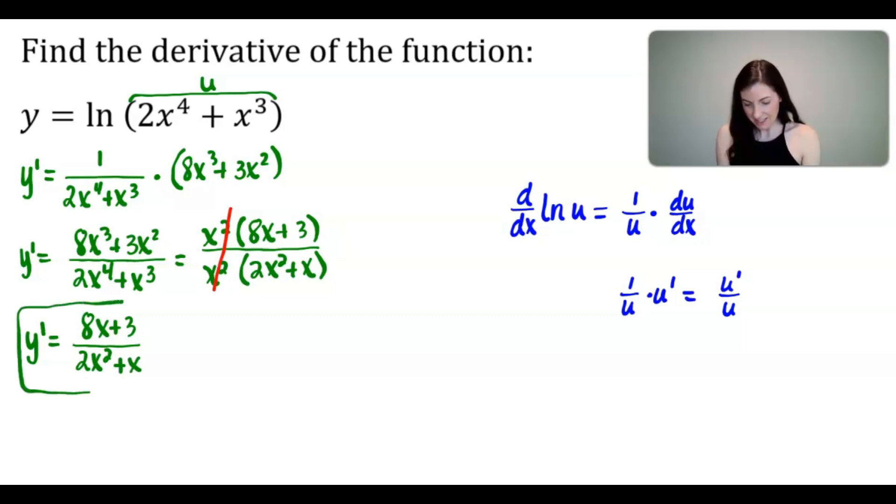And there it is. This is the derivative of natural log of 2x to the 4th plus x cubed. And notice something interesting. Notice the answer, the derivative, doesn't have a natural log at all in the answer. So keep that in mind when you find the derivative.